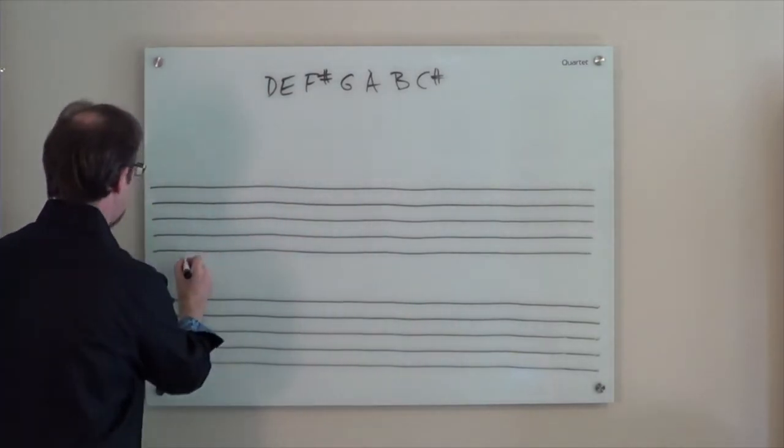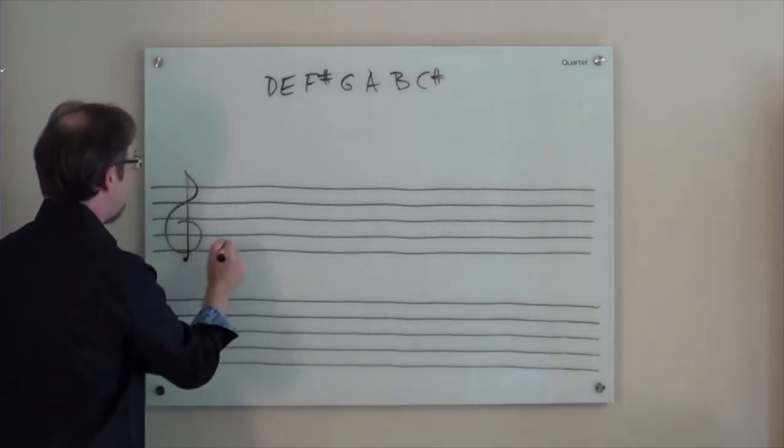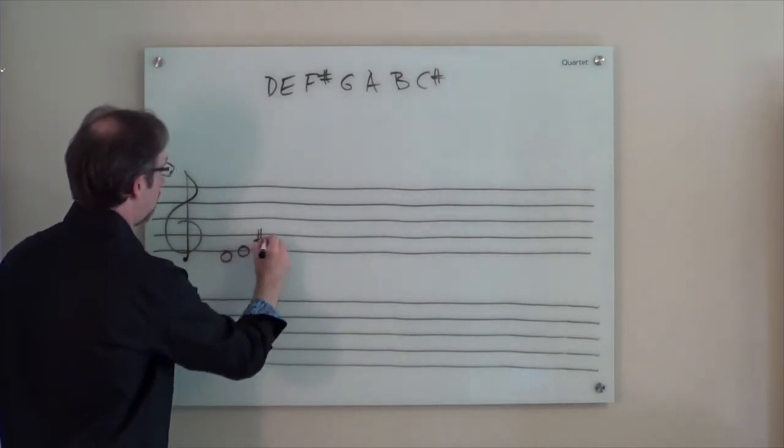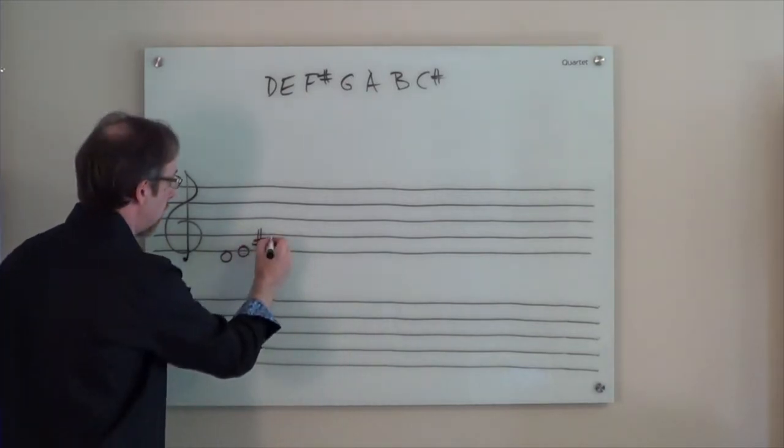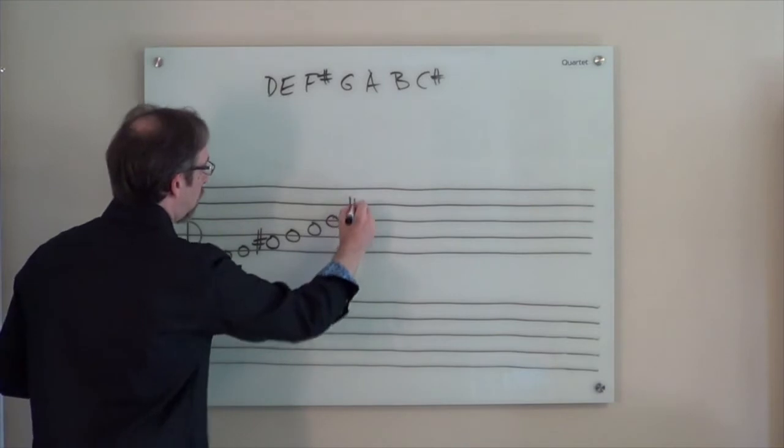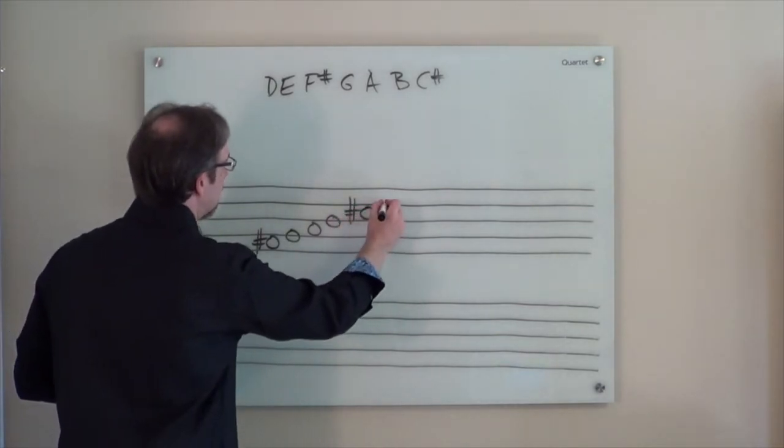Whereas when you write on staff paper, let's say you would go D, E, the sharp comes before the note head. G, A, B, again sharp, note head C, D.